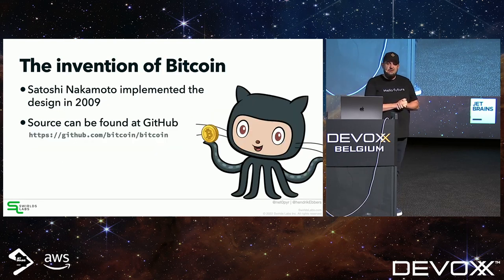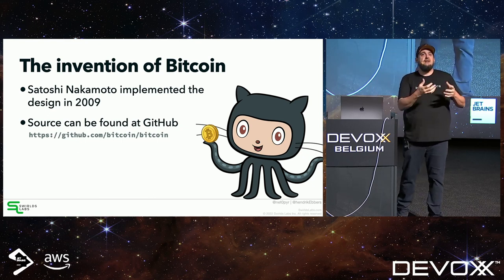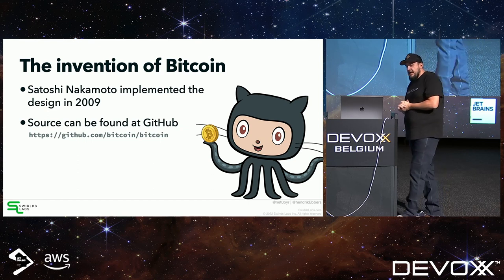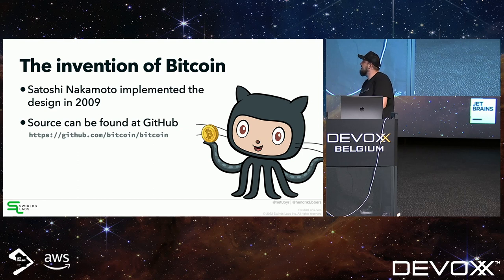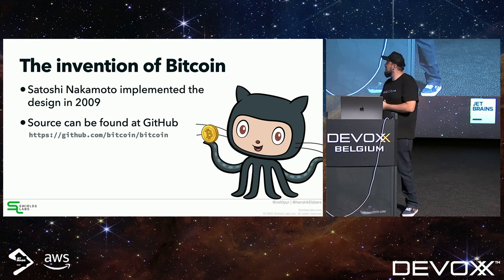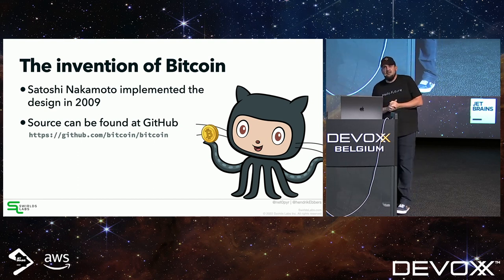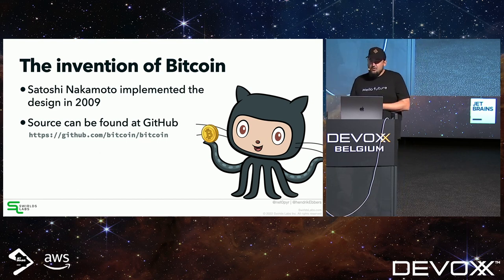After the paper was created, Satoshi Nakamoto started implementing the Bitcoin architecture in 2009. The source code can be found on GitHub under the Bitcoin organization repository.